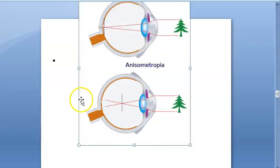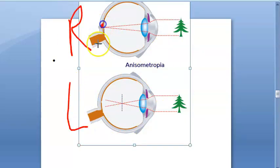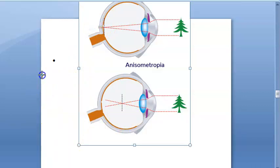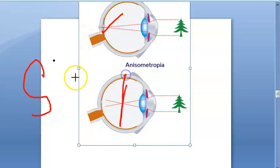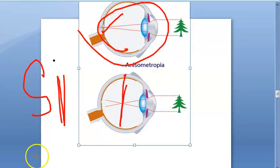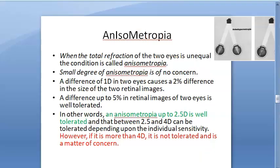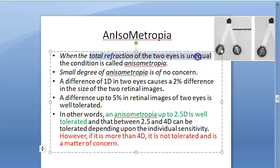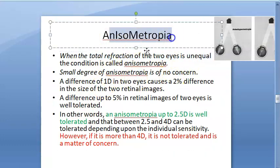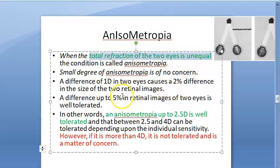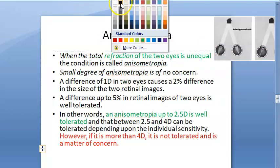Now, if one eye forms the image on the retina and the other has myopia, this is simple anisometropia — where one eye is perfectly fine and the other has myopia or hypermetropia. Anisometropia means the total refraction of the two eyes is unequal. If one eye is normal it is called simple anisometropia. Refraction of the two eyes is unequal — that is the core definition.